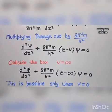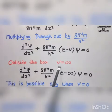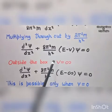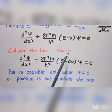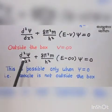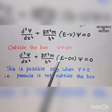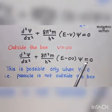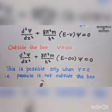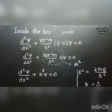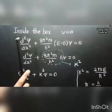We have two conditions: one is outside the box and the other is inside the box. For the first condition — outside the box — V equals infinity. Putting V equal to infinity in the equation: d squared psi over dx squared plus 8 pi squared m over h squared times (E minus infinity) psi equal to 0. This is possible only if psi equals 0. So the probability of finding the particle outside the box is 0; the particle is not outside the box.